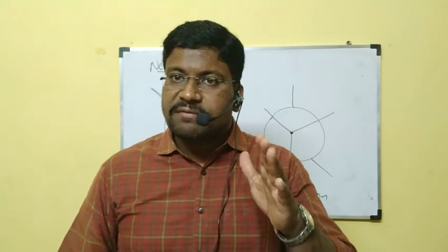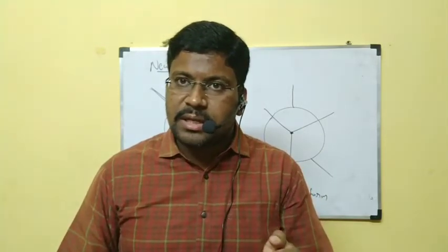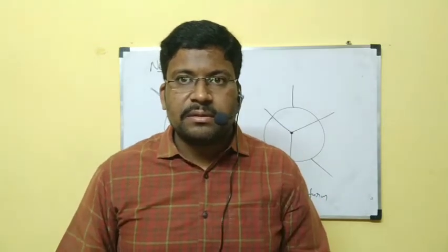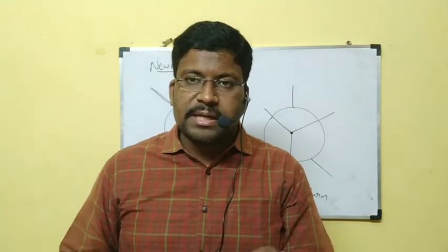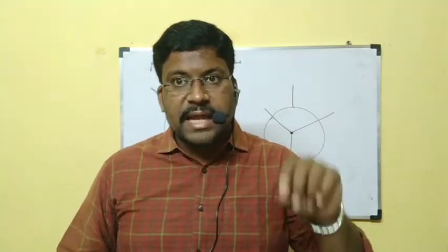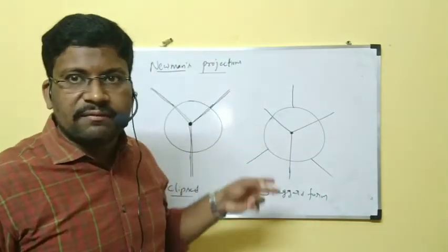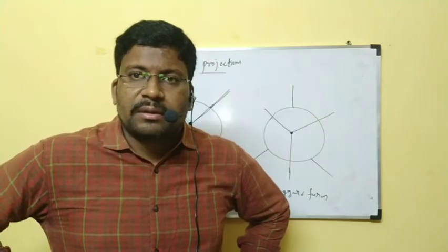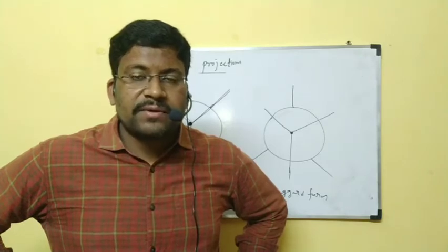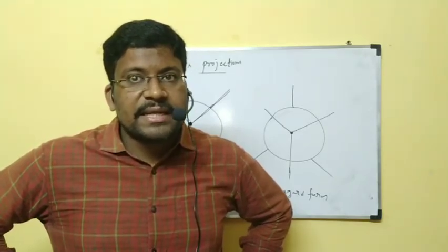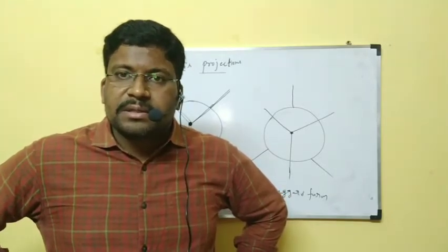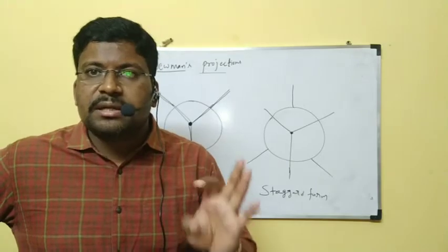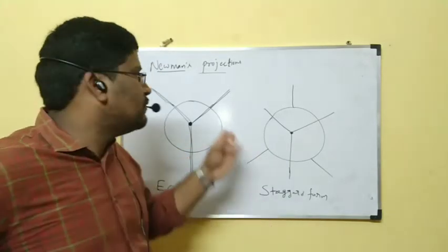So many conformations are possible for ethane, but we are depending on only two forms. Of these two forms, the highly stable one is staggered form because hydrogens are far away from each other and repulsions are less. Staggered form is more stable when compared to eclipsed form. Those are shown with the help of Sahos projections and Newman's projections. Also, the dihedral angle is also called torsional angle. By this, the alkanes topic — conformations — is completed.